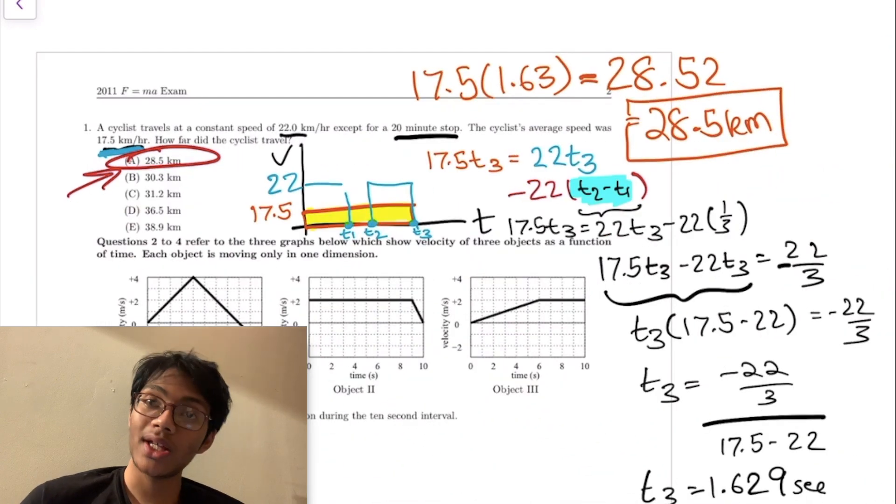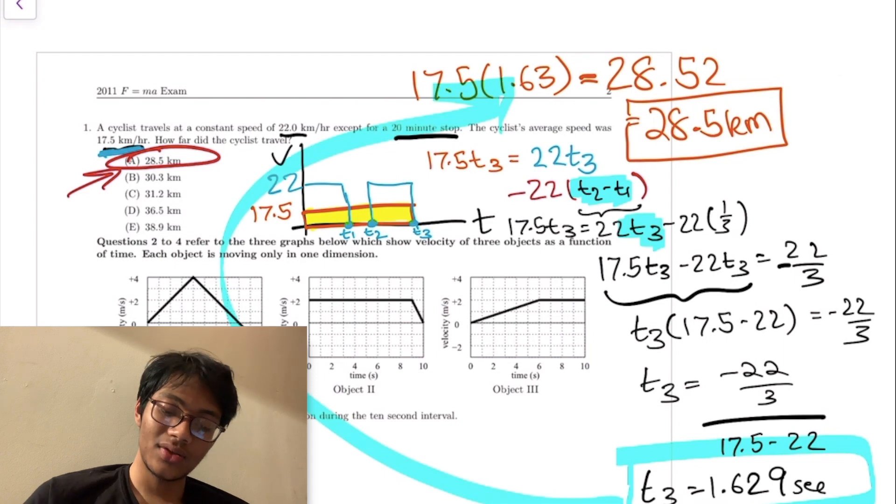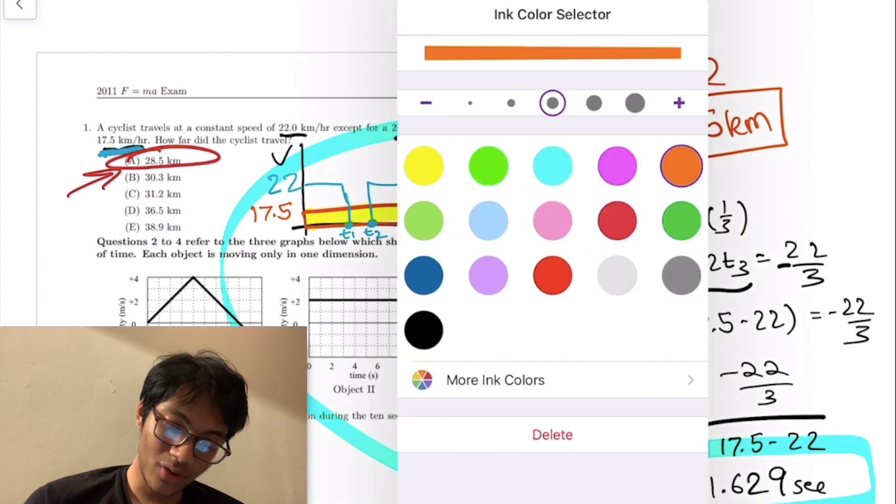If you want a quick recap, what I did was I took a graphical approach where I drew the VT graph. That told me that the area under the average was equal to the area under the whole graph, which is given by the total distance you traveled minus your brake chopped off. With that, I solved for t3, got 1.629, and plugged that back into 17.5 times t3, and found that his total distance traveled was 28.5 kilometers.